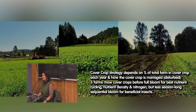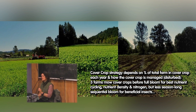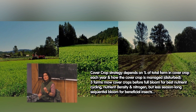The crop strategy depends on the percent of total farm in cover crop each year, and how the cover crop is managed — meaning disturbed. Three farms mow the cover crops before full bloom because their management priority and ecological function priority is to grow as much of their own fertility as possible.